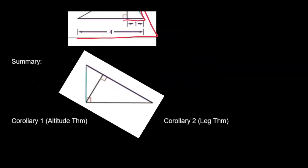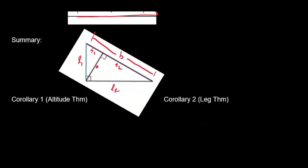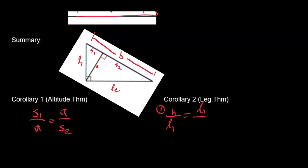A little summary: if the whole hypotenuse length is H, and the two segments are S1 and S2, with legs L1 and L2, and altitude A, then S1 over A equals A over S2 (T theorem). For the V theorem: H over L1 equals L1 over S1, and H over L2 equals L2 over S2.